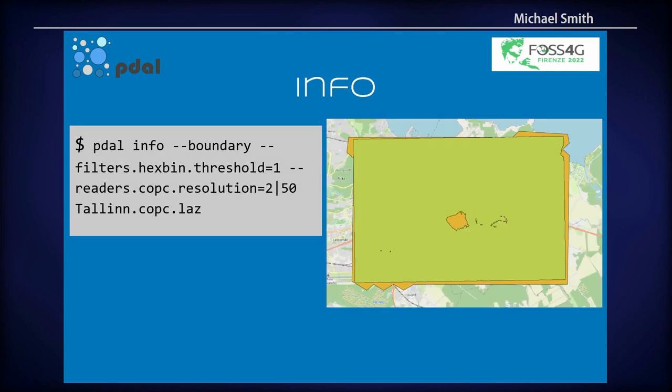Here's an example of generating a boundary for a COPIC file. You can see that there are two different resolutions here — 2 meters and 50 meters. The 50-meter boundary is pretty coarse, but at 2 meters you can generate a much tighter boundary to get a better idea of your data. This is just one of those things you can do with COPIC because you can filter out and set the resolution of the information that you want for your analysis.